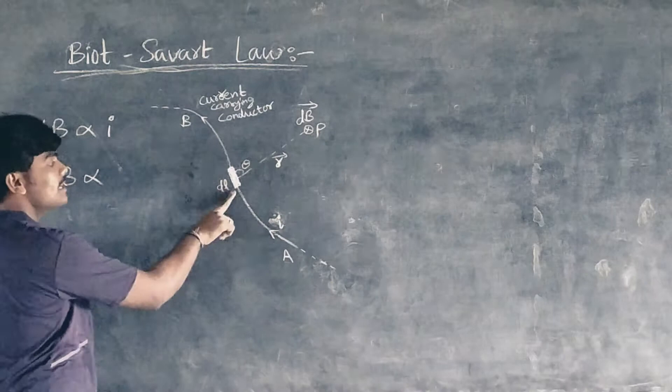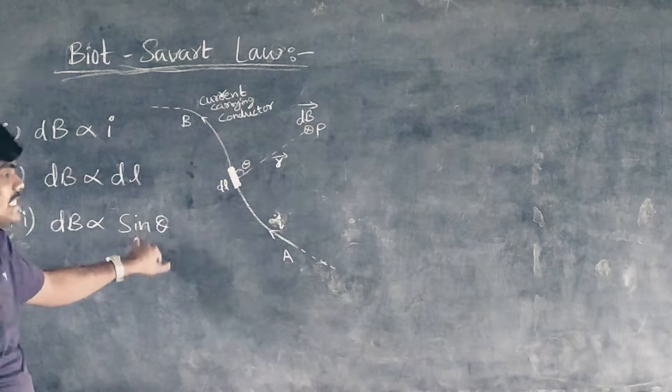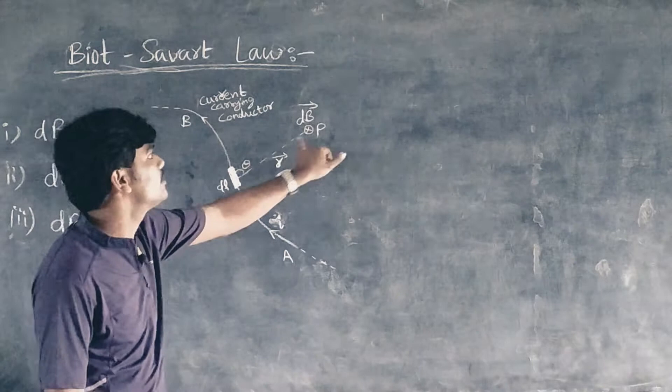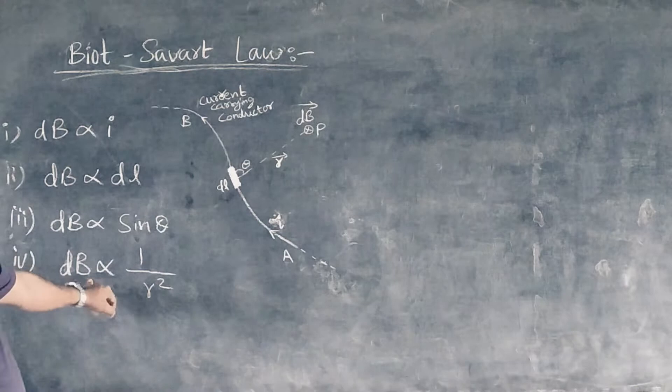Third, it is directly proportional to the sine of the angle theta between the length of the element and the line joining to P. Fourth, it is inversely proportional to the square of the distance r of point P from the element dl.